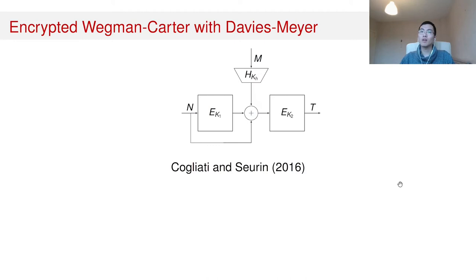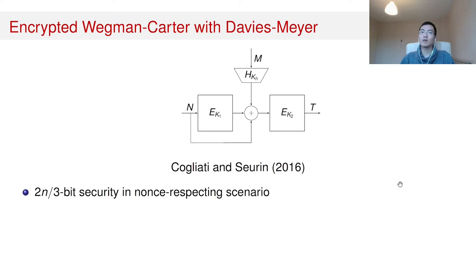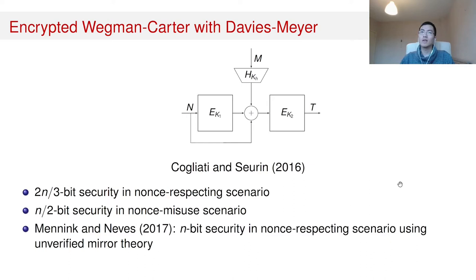In order to solve the above-mentioned problems, Duhliadi and Seren introduced in 2016 the construction Encrypted Wegman-Carter with Davies-Meyer (EWCDM). They showed that the construction achieves 2n divided by 3-bit security in the nonce-respecting setting. One year later, Manning et al. showed that EWCDM actually achieves n-bit security in the nonce-respecting setting, but their proof is based on an unverified version of the mirror theorem.